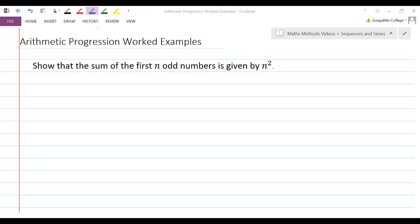The final example in this series of videos is another algebraic proof. And this one is related to finding the sum to n terms of a sequence. So we're asked here to show that the sum of the first n odd numbers is given by n squared.